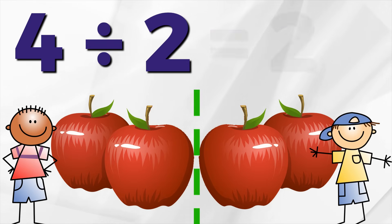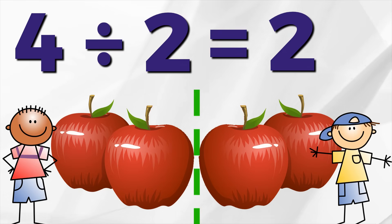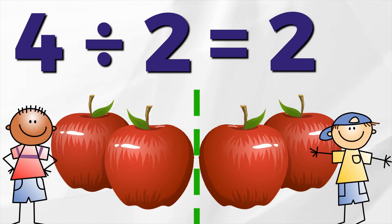It shows us we're dividing. What is four divided by two? Yeah, two. That's right. Four divided by two equals two. If Michael and Liam are splitting these four apples, they each get two.